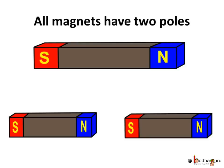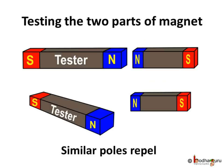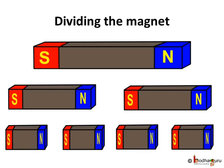If a magnet is cut into two parts, both the parts will behave like a magnet and each will have a North Pole and a South Pole. We can test this by bringing a tester magnet — we will find that the opposite poles attract each other, while the similar poles of the two magnets repel each other. We can continue to cut the magnet into smaller pieces, and every time each piece will behave like a magnet with both the North and South Pole.